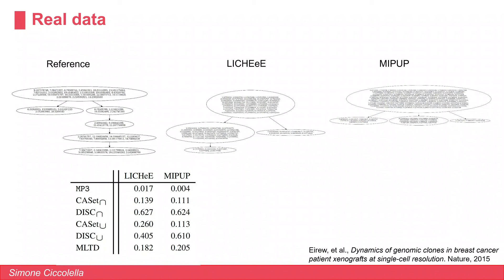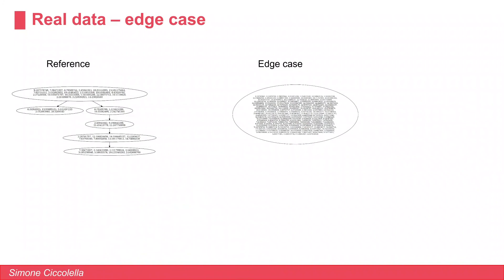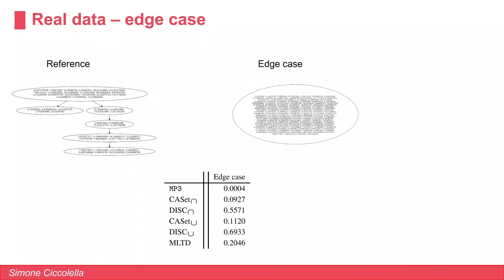To further investigate this discrepancy, we created an edge case: we took all 158 mutations from the MP3 tree and placed them all in one single node, then compared this edge case with the reference. We see that MP3 is the only measure actually able to find the expected very low similarity between those trees, since they are completely different both topologically and label-wise. This may be an accentuated edge case, but the issue is still very present in the real data, where MP3 is the only measure sensitive enough to capture all these different nuances.